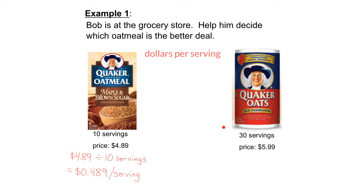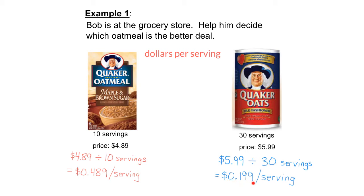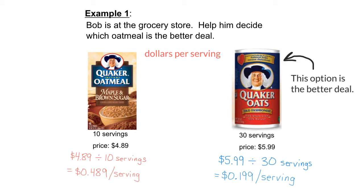For the second option, we have $5.99 for 30 servings, so we take $5.99 divided by 30, which works out to $0.199 per serving. Now we can make a fair comparison: $0.489 per serving versus $0.199 per serving. The second option has a lower price per serving, so that option is the better deal.